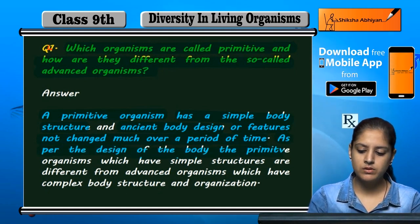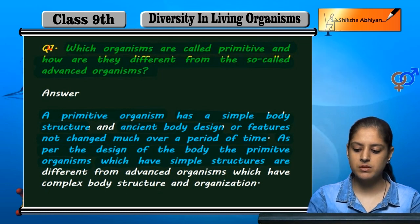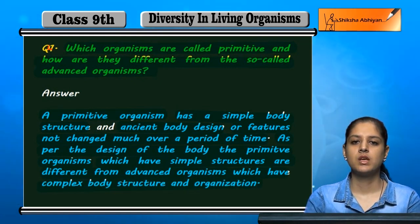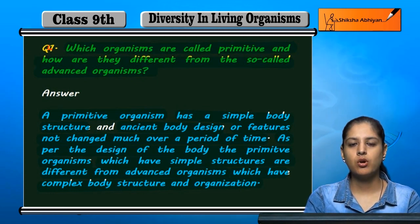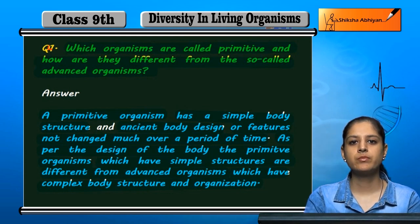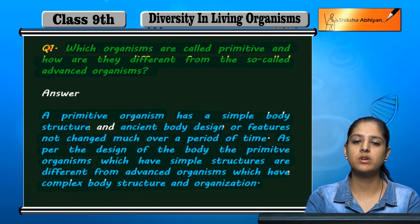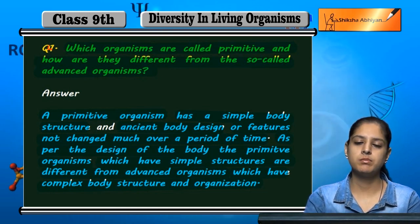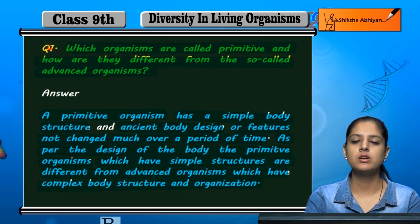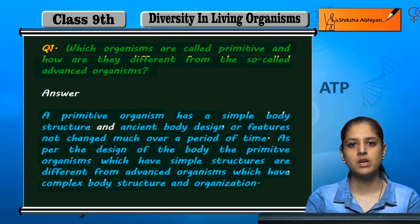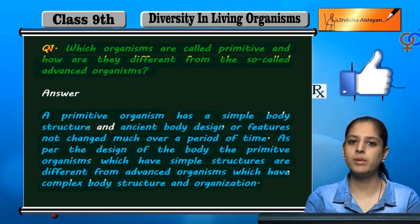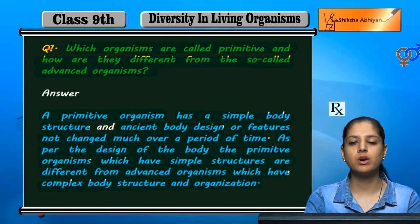As per the design of the body, the primitive organisms which have simple structures are different from advanced organisms which have complex body structures and organization. Over time, evolution and advancements happen. So the difference between advanced and primitive organisms is in their body structure — primitive organisms have a very simple body structure, while advanced organisms have a complex one.